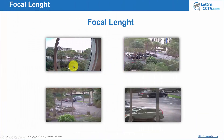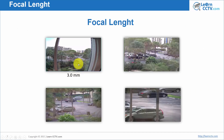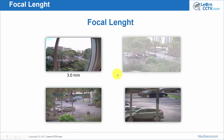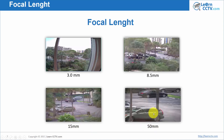Basically it works like this. At 3 millimeters I have a wide view — same camera, same building. Then I change to 8.5 millimeters, coming closer. And closer again with 15. And even closer with 50 millimeters.